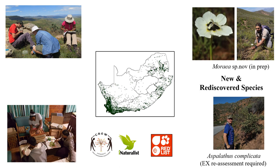We have found that in once-off visits, one can hugely underestimate the species that occur on a particular site. One of our case study sites had only six threatened species recorded. After repeat visits at different times of the year, our citizen scientists recorded a total of 24 threatened plant species on the same site. This has elevated the site from being important to one of the top priority sites in the region.